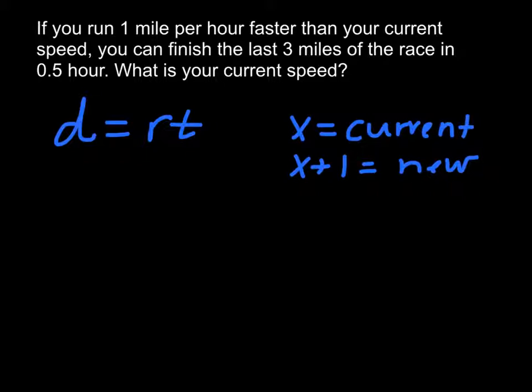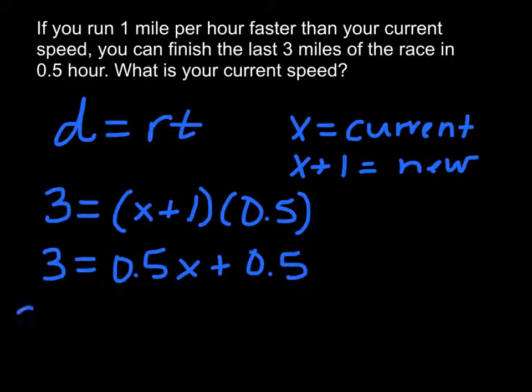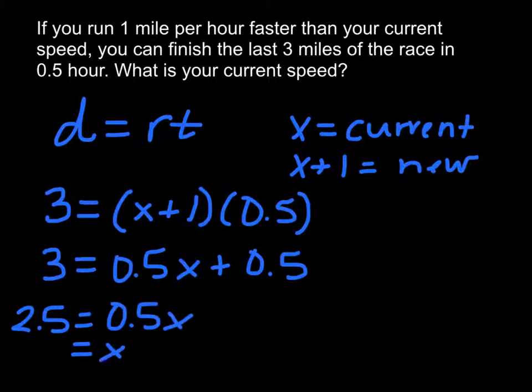Now we distribute. 0.5x plus 0.5 will give us 2.5 equaling 0.5x, which gives us x equaling 5. Therefore, our current speed is 5 miles per hour.